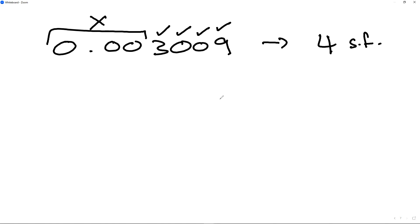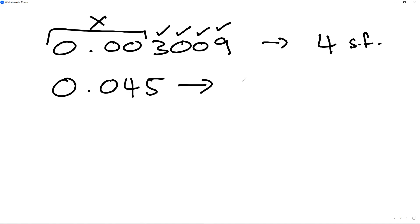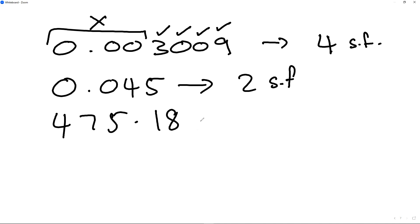Let's look at a few more practice questions. 0.045 has two significant figures. If I've got 475.18, that's one, two, three, four, five — five significant figures.